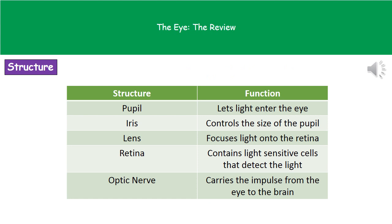In terms of what each part does: the pupil is basically a hole whose whole purpose is to allow light to enter the eye. The coloured part around it, the iris, changes the size of the pupil, so the iris's function is to control the size of the pupil and therefore control how much light enters the eye.